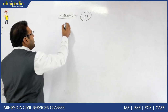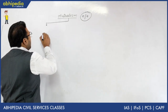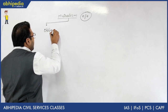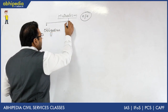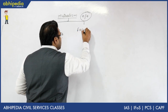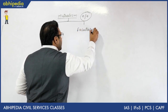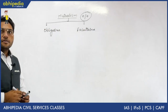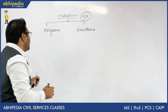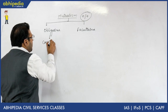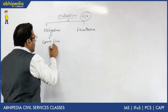Mutualism can be further divided into two types. One is obligative mutualism and another one is facultative mutualism. In the case of obligative mutualism, the species cannot live without one another.